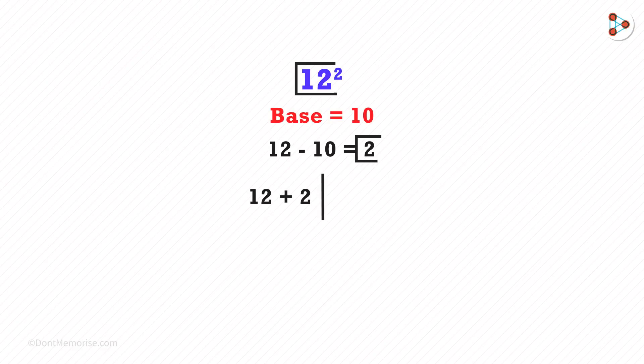Hence, the left side will be 12 plus 2. On the right side, the number of digits will be equal to the number of zeros in the base. Here, we have only one zero, so we'll have just one digit. On the right side, we will write the square of the difference, that is 2 squared.